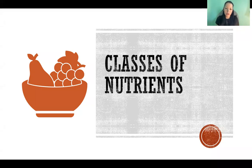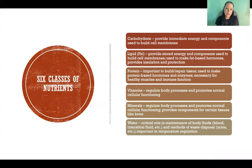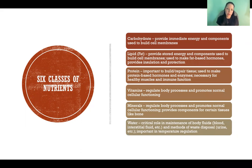Hello, in this video I'm going to talk about the different classes of nutrients. There are six classes of nutrients that includes carbohydrates, lipids, proteins, vitamins, minerals, and water. Here I've included some of the basic functions and uses of the different classes of nutrients, but I will go into greater detail in future videos.